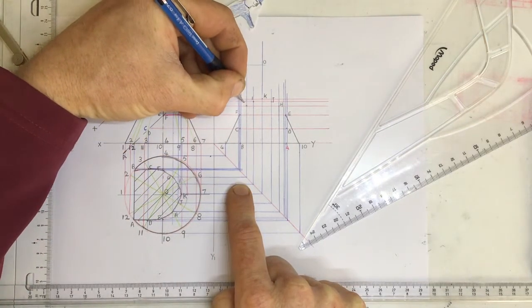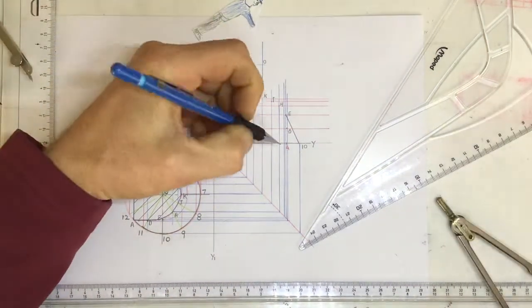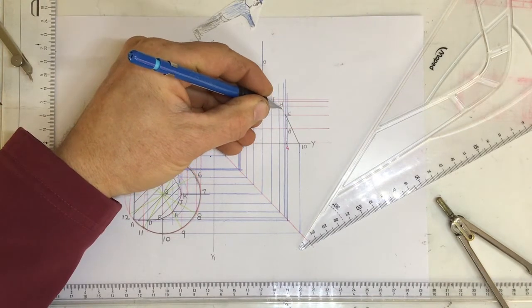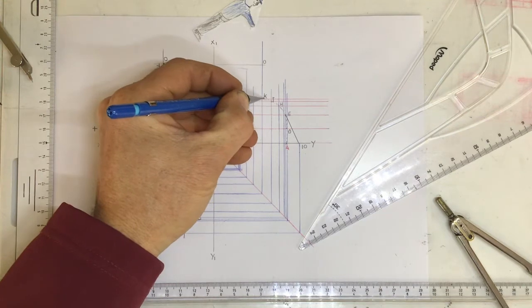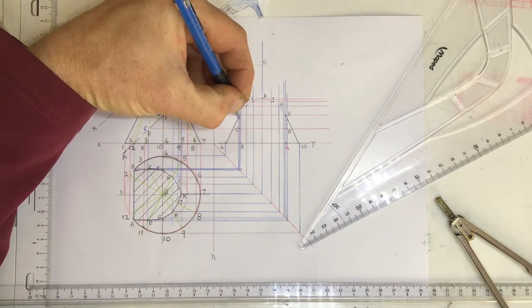And once I've got those points in place, I can then draw in my cutting plane over here. There's something like this, dash, dash, dash, just getting it in place so that I can see whether it looks correct. There it is, coming around.